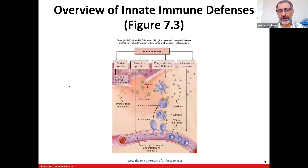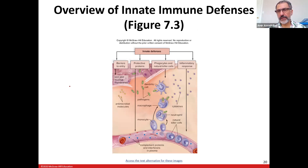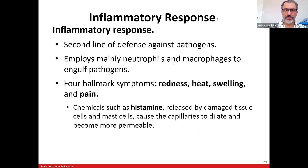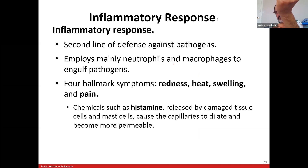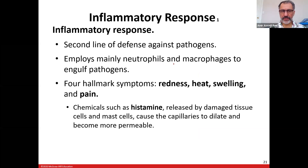Innate immunity includes barriers like skin, protective proteins, phagocytic cells, and natural killer cells that protect against bacteria and fungi, plus inflammatory responses. Anytime you hear inflammatory response, four things should come to mind: redness, heat, swelling, and pain. If you feel pain, redness, and swelling without cutting yourself, that's a problem that needs attention.